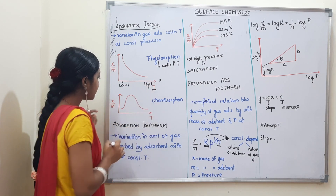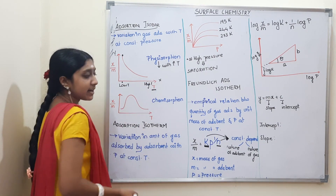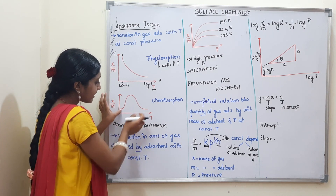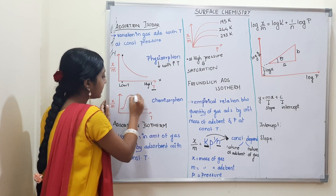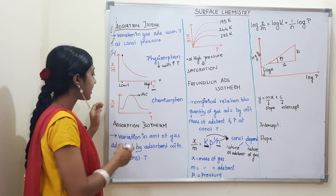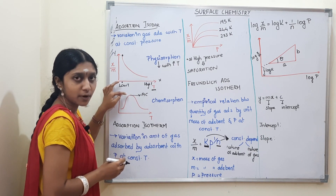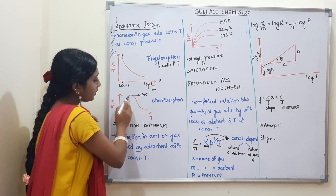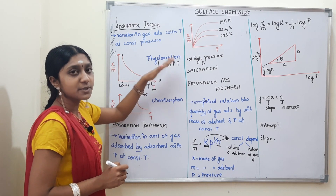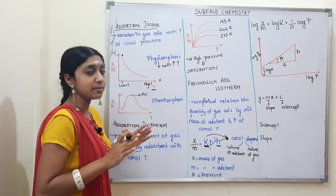For the chemisorption graph, x/m is on the y-axis and temperature on the x-axis. In chemisorption, there is first an increase as an activated complex forms, then a decrease. So for chemisorption, the curve first increases then decreases. That covers the adsorption isobar for both physisorption and chemisorption.